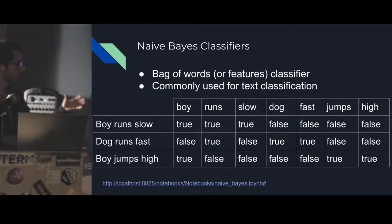So all that Naive Bayes does is, based on those true false values, it will add up and calculate probabilities for each word.